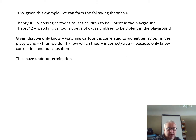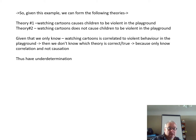Given this example, we can form the following theories. Theory one: watching cartoons causes children to be violent in the playground. Theory two: watching cartoons does not cause children to be violent in the playground. Given that we only know watching cartoons is correlated with violent behavior in the playground, we don't know which theory is correct, because we only know correlation and not causation. Thus we have underdetermination.